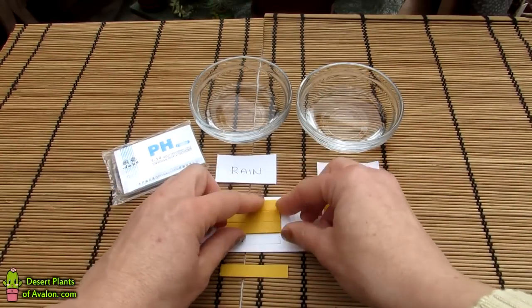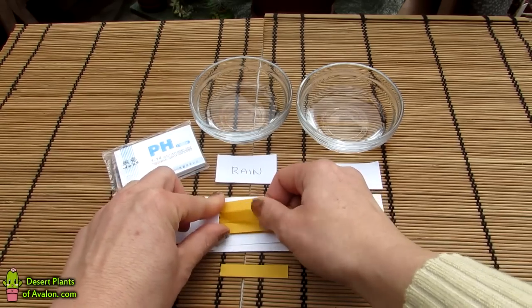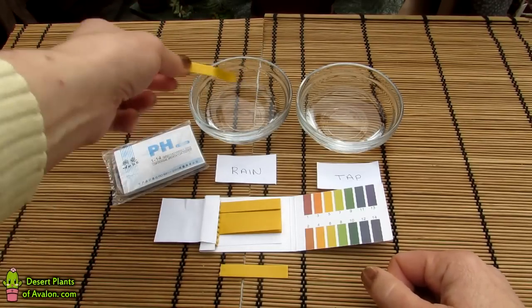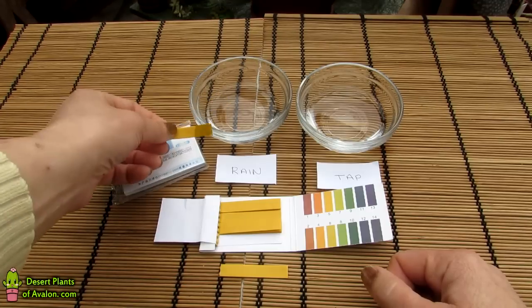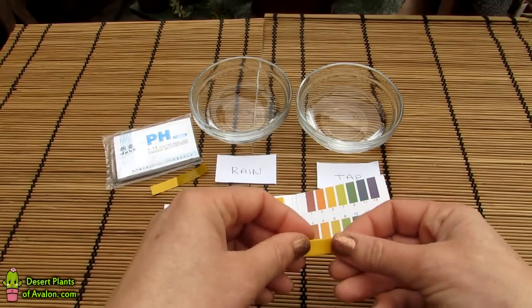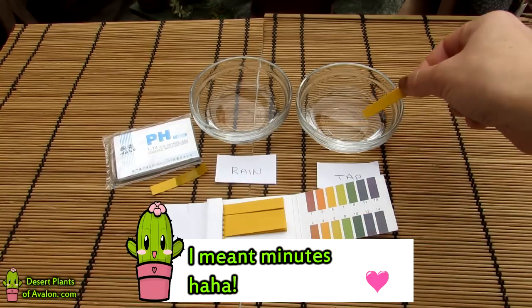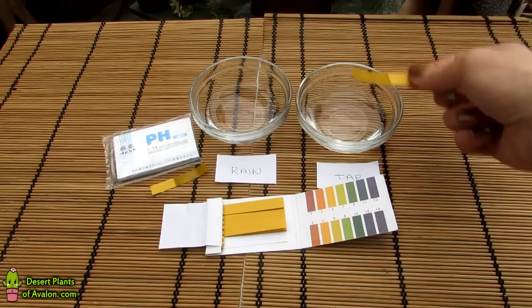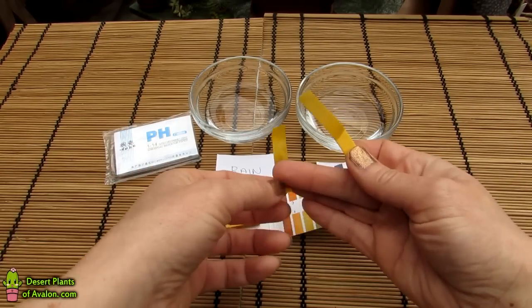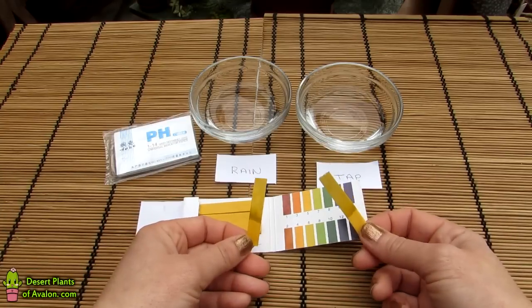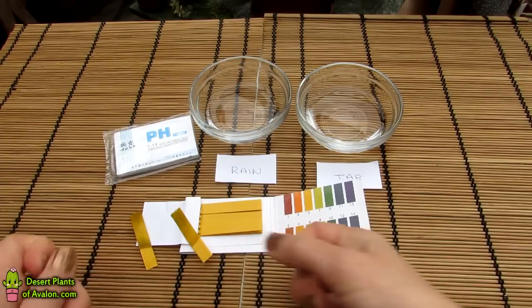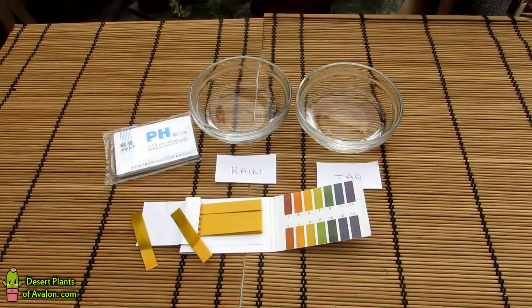All you do is take one of these strips off like so. I'm going to use two to show you the difference. This is rainwater here. Dip it in for a few seconds, take it out, give it a shake, and leave it there. Then this one is the tap water—dip that in for a few seconds, and leave that like so. You wait a few seconds and see the difference.